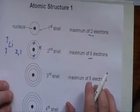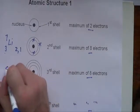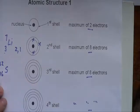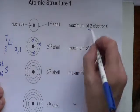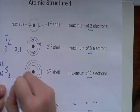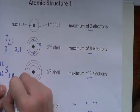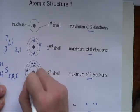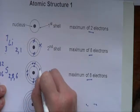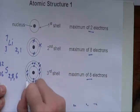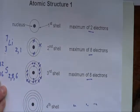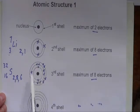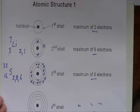If we take something with three shells — sulfur, which is 32 and 16 — it has 16 electrons. We fit two in the first shell, eight in the next one bringing us to ten, with six left over in the third shell. So we write it as 2,8,6. The examiner may ask you to represent that either in shorthand like so, or in a dot-cross diagram.